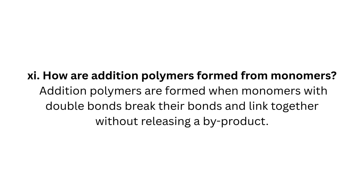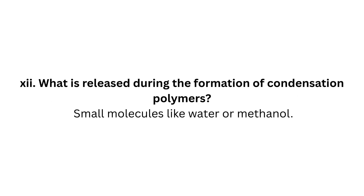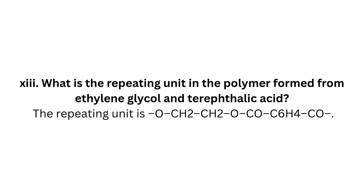Question 11: How are addition polymers formed from monomers? Addition polymers are formed when monomers with double bonds break their bonds and link together without releasing a byproduct. Question 12: What is released during the formation of condensation polymers? Small molecules like water or methanol. Question 13: What is the repeating unit in the polymer formed from ethylene glycol and terephthalic acid? The repeating unit is O-CH₂-CH₂-O-CO-C₆H₄-CO.